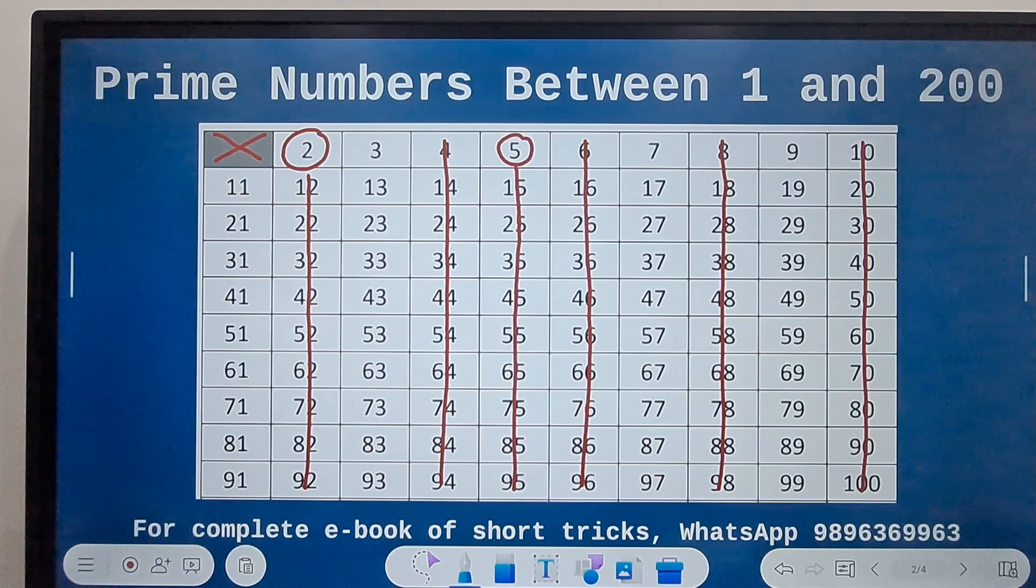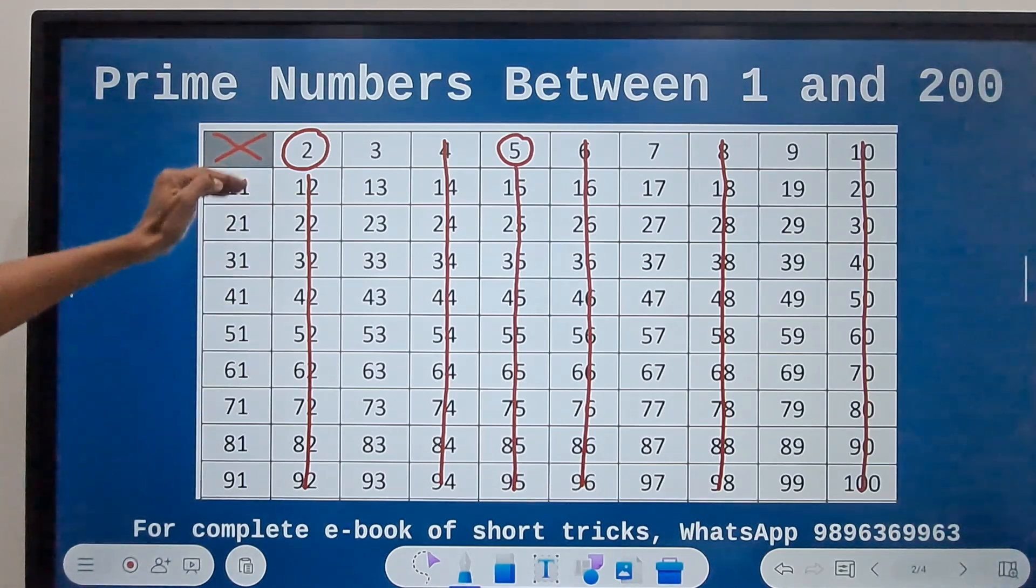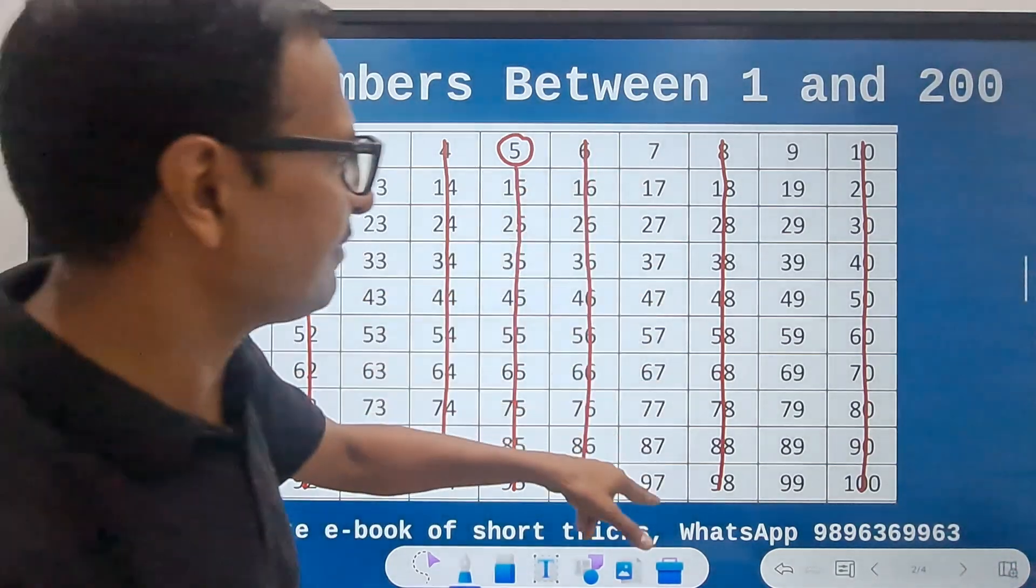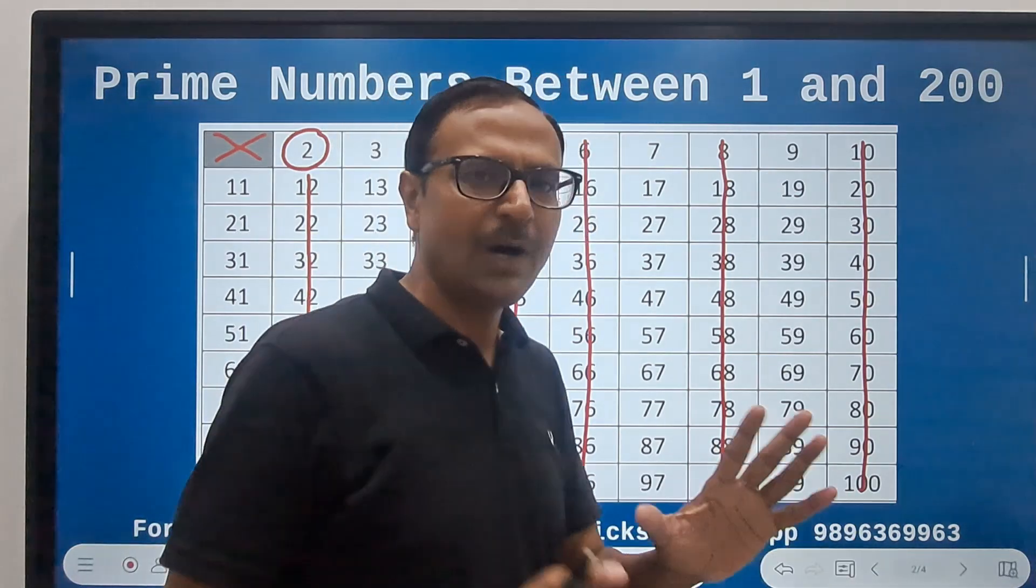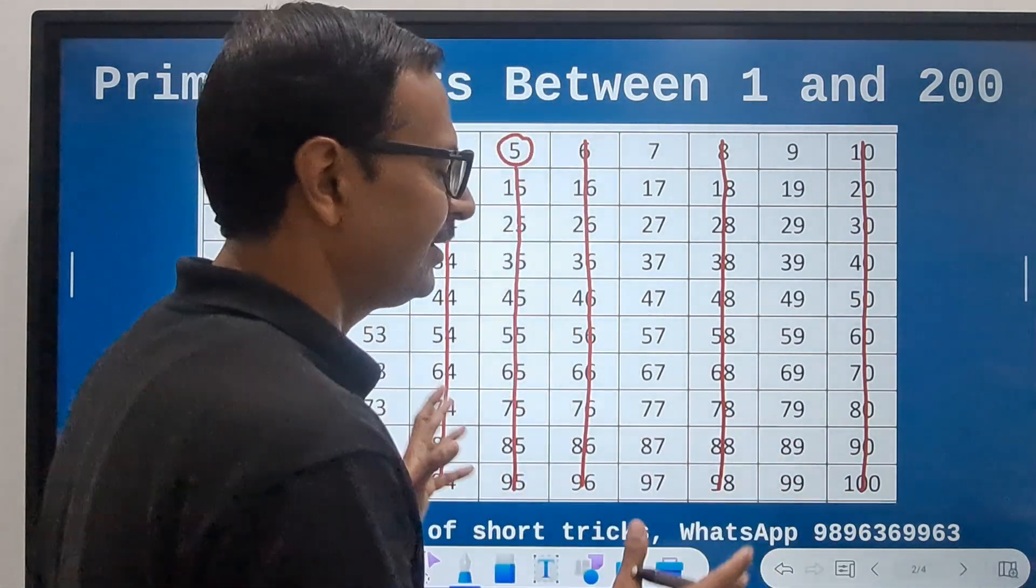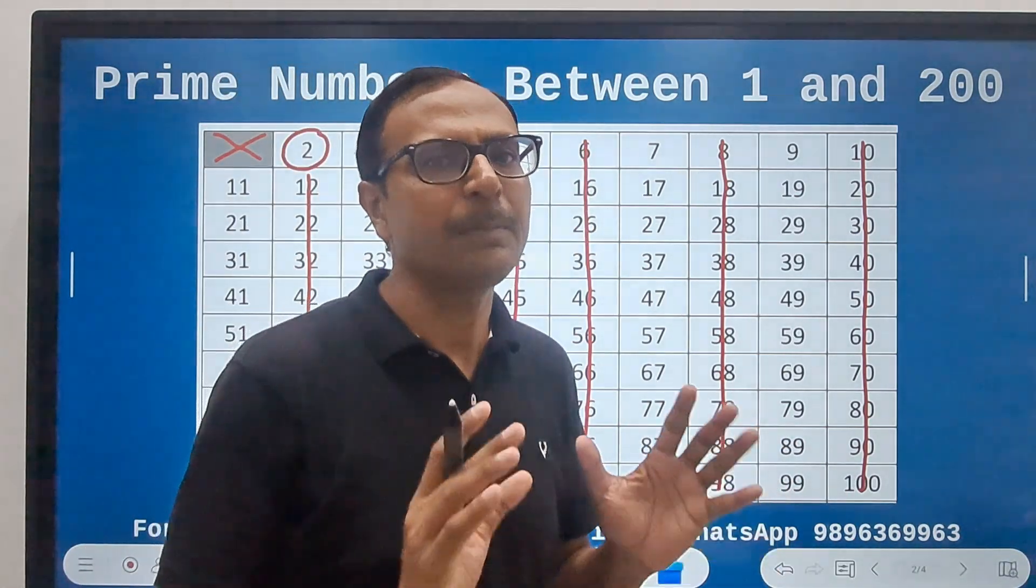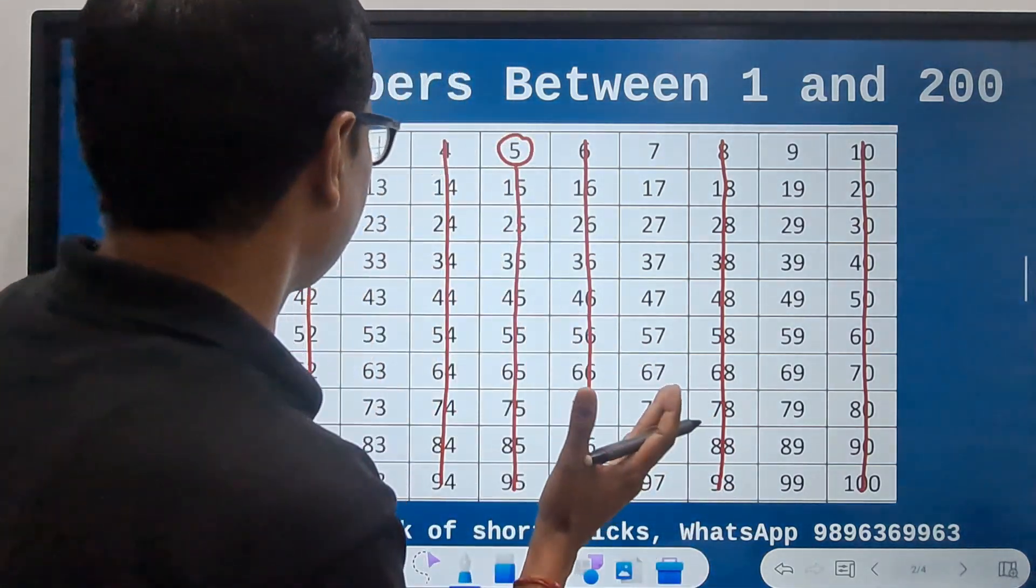So I have only 4 columns now: ending in 1, ending in 3, ending in 7, and ending in 9. Out of these, 25 numbers are prime.